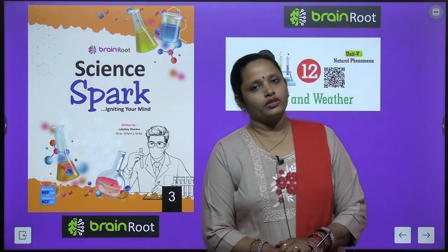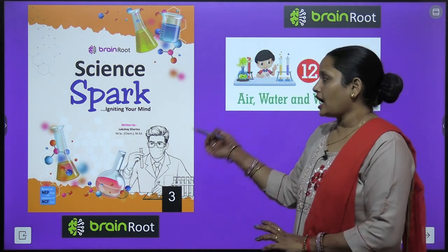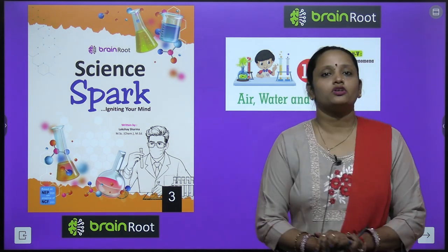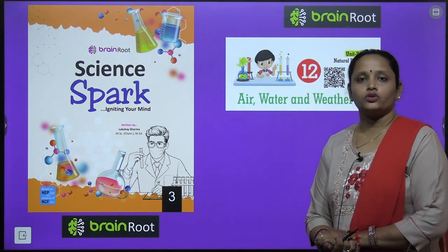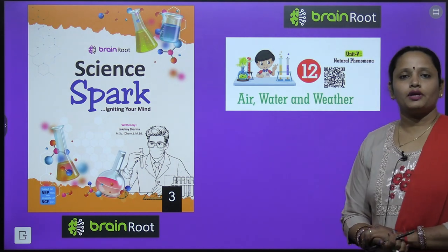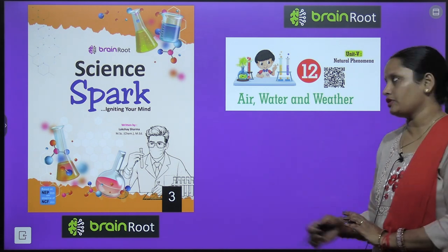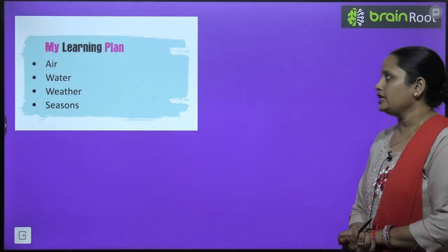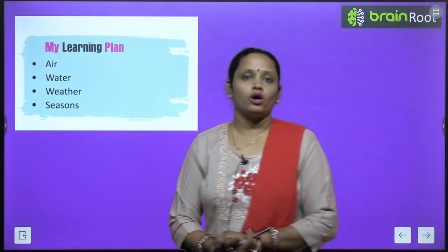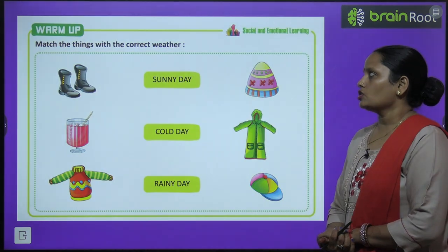Hello my dear kids, welcome back. I am Vandana and we are learning science of class 3 by Brain Road series. Here is the book Science Park. Today we are going to start with chapter number 12, and the name is 'Air, Water and Weather'. In this chapter we are going to learn about these three components — air, water, weather — and also about seasons.